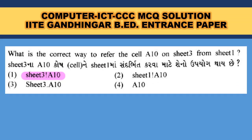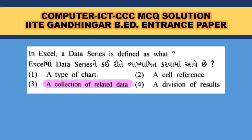What is the correct way to refer to cell A10 on Sheet 3? When you want to refer to a cell from another sheet, use the name of the sheet, then the cell, using an exclamation mark — so that is the correct answer. In Excel, a data series is defined as a collection of related data.